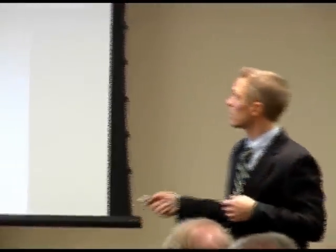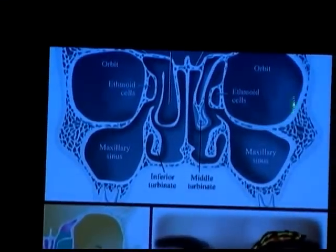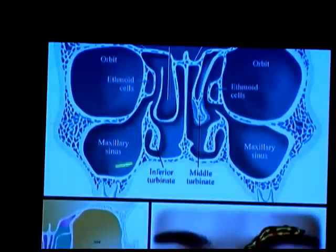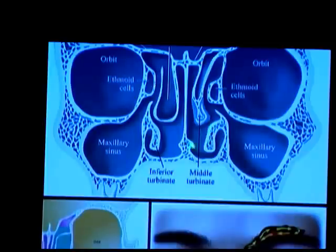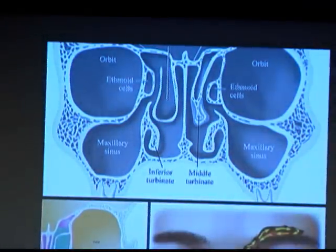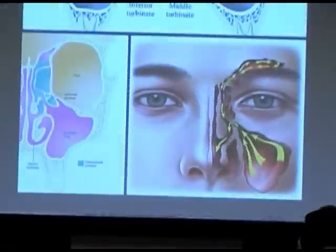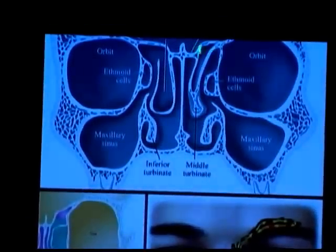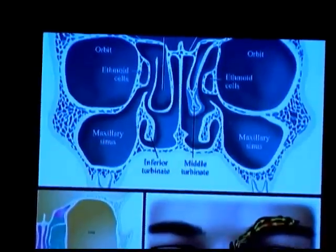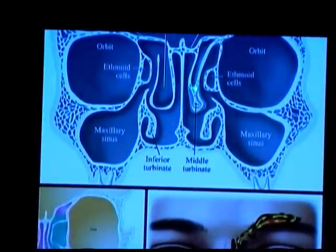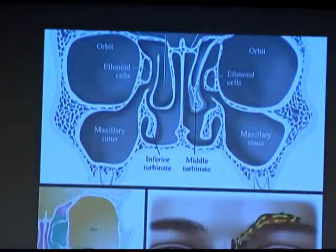If you imagine taking a slice of someone's face, you can see the eye socket, the eyeball, and the cheek sinus. The nose is divided into two sides by the nasal septum, and off the side are structures called turbinates - little radiators for your nose. The nose is there to humidify and filter out dust. Under the middle turbinate is where the openings into these sinuses exist.